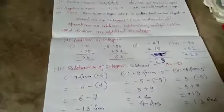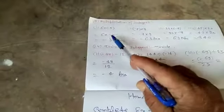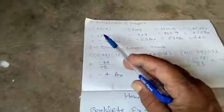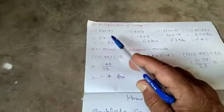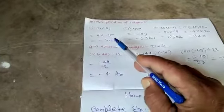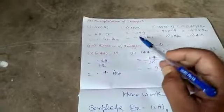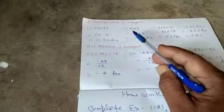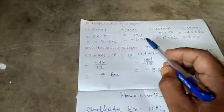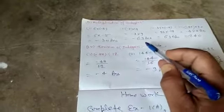Third operation on integers. That is multiplication of integers. Taking some examples. First. 6 multiplied minus 5. Equal to minus 30. Second. Minus 7 multiplied 9. Equal to minus 63.